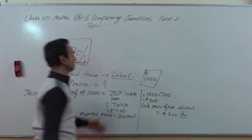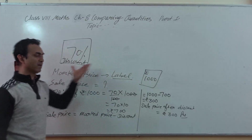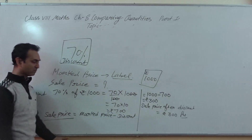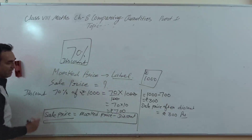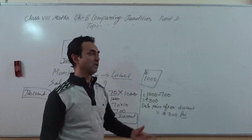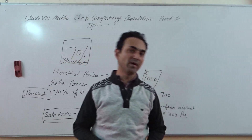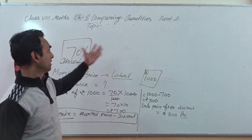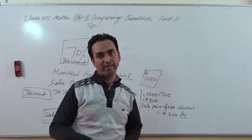So you have understood how we calculate discount — when we are given mark price, how we find the discount amount and how we find the actual sale price. This is the formula to find the sale price after discount. So in this Part 1 you have understood: the meaning of ratio, the meaning of percentage, how to find increase and decrease percentage, and how to find the discount. In the next part we will meet again — thank you.